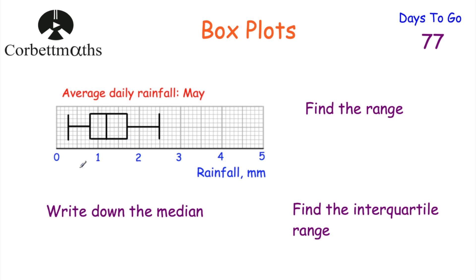To find the range, let's figure out what each of the little boxes is worth. We go from naught to one and there are ten boxes, so one divided by ten is 0.1. So each of the little boxes is worth 0.1. That means our lowest value is 0.3, our lower quartile is 0.8 millimetres, our median is 1.2 millimetres, our upper quartile is 1.7, and the highest amount of rainfall is 2.5 millimetres. So we've written down our values for the lowest, lower quartile, median, upper quartile, and highest amount of rainfall.